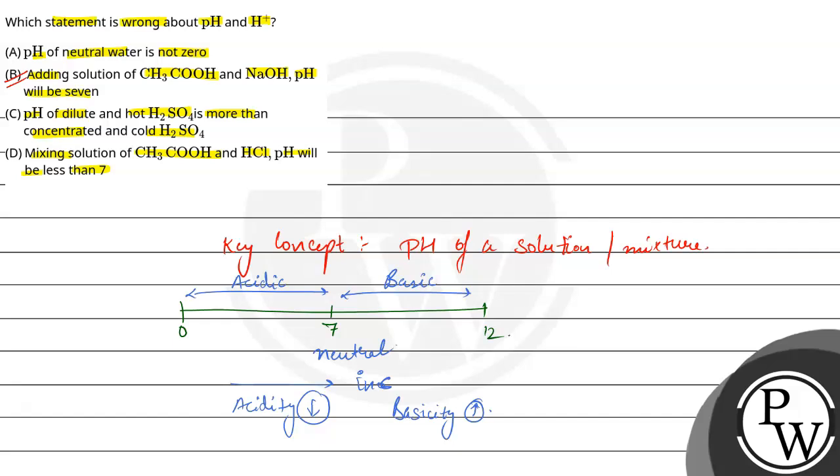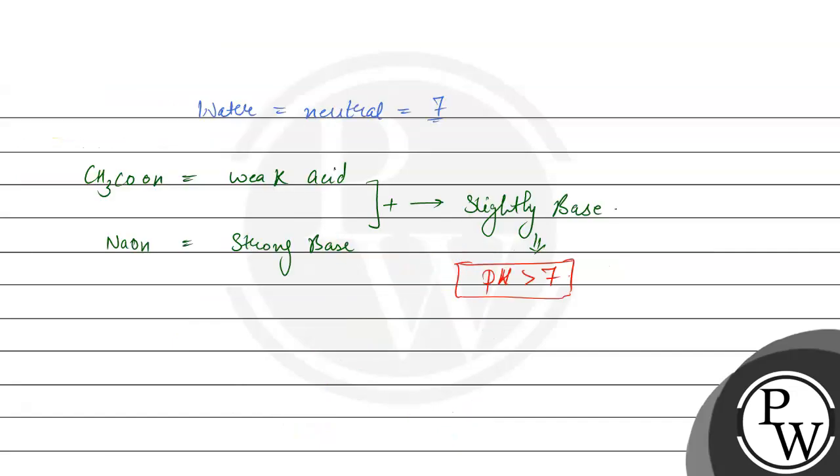In C, we have said that the pH of dilute H2SO4 will be more than concentrated and cold H2SO4. Now as we know that dilute H2SO4 will be less acidic, it will have more pH as compared to concentrated H2SO4. That means part C is also a correct option.